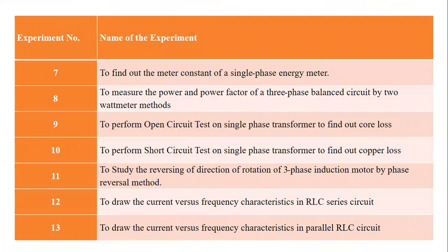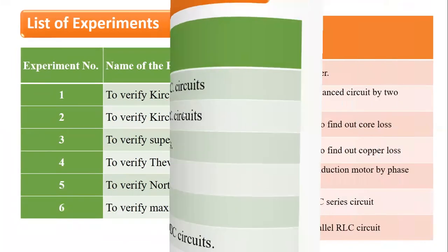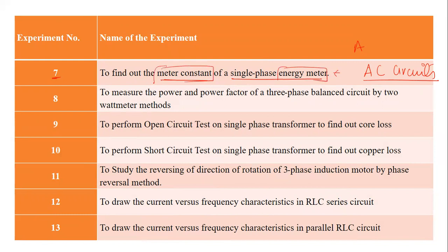The remaining seven experiments are related to AC circuits, while the first six were related to DC circuits. The first among the AC experiments is experiment number seven, which is related to the measurement of the meter constant of a single phase energy meter. In this experiment, you will learn what an energy meter is, how to measure its meter constant, and what is its significance.